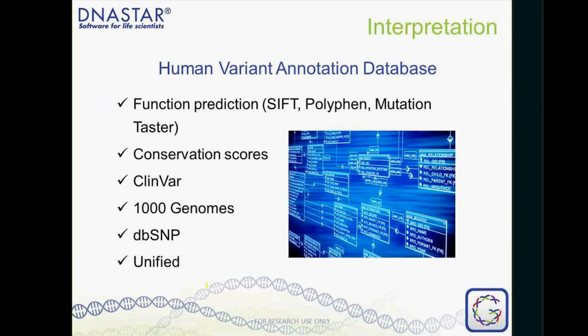Some new functionality we've added to this workflow is the human variant annotation database. When working with human data sets, we can bring in information from our database — functional predictions, conservation scores, allele frequencies — and import that into our analysis. We can then filter on it to find those interesting SNPs in very large data sets. I'll be able to show you this today.